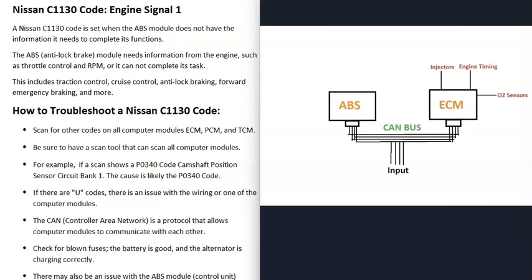For this reason, the first thing to do is look for other computer codes because very likely there is some other type of code and there is some kind of other issue that once you fix that issue then the C1130 code will go away. It is also possible that the ABS control module has failed, but again if it has then you're going to get another code.